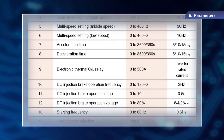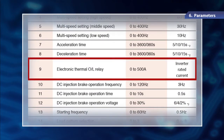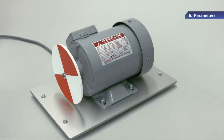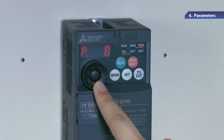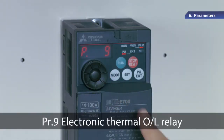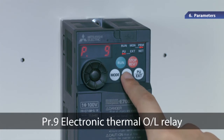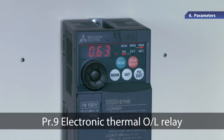First of all, let's set the rated motor current value to protect the motor from overheating due to an over current. The rated current value is the specification set to run the motor and is specified on the motor name plate. To set the value, use parameter number 9, which is for electronic thermal OL relay.